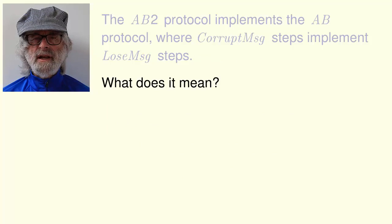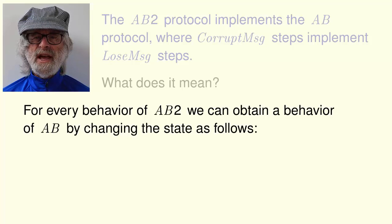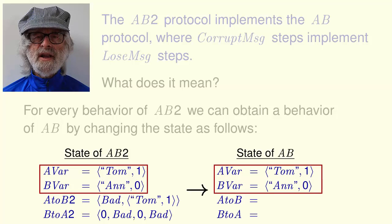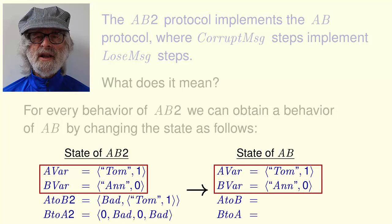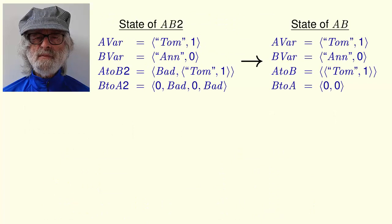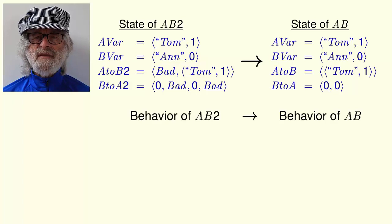First, exactly what does this mean? It means that for every behavior of the AB2 protocol, we can obtain a behavior of the AB protocol by changing the state as shown in the following example. For this state in a behavior of AB2, here's how we get the corresponding state in a behavior of AB. The values of Avar and Bvar are the same. We obtain the sequence of messages A to B from the sequence of messages A to B2 by deleting the bad messages, and we do the same thing to obtain the sequence of messages B to A from the sequence of messages B to A2. AB2 implements AB means that this transformation of states of the AB2 protocol to states of the AB protocol transforms a behavior of the AB2 protocol to a behavior of the AB protocol.